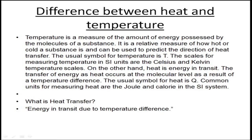From liquid phase to vapor phase, when a substance transforms, it requires some heat energy to be input, and that heat energy does not change the temperature. The heat energy required to change the phase of a substance — whether solid to liquid, liquid to gas, or vice versa — is called latent heat. It is called latent heat because it cannot be detected by a thermometer. The thermometer cannot detect that change in heat energy because there is no change in temperature.